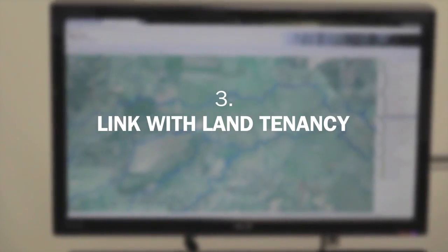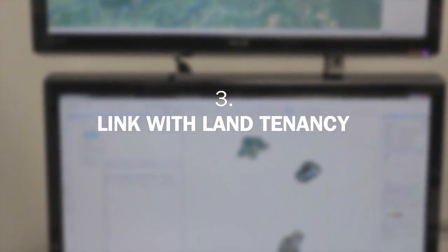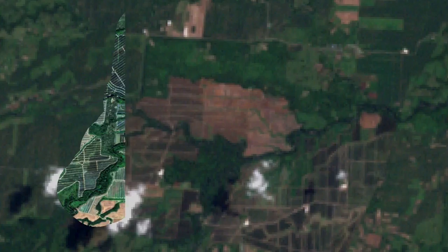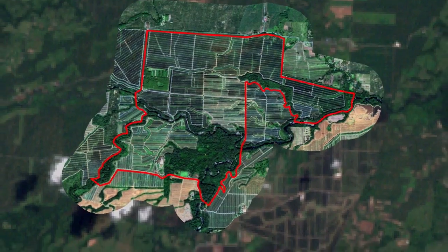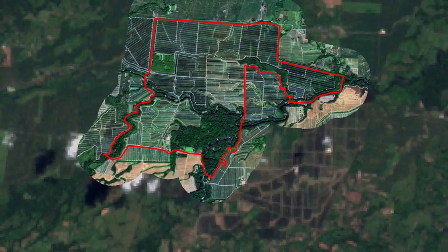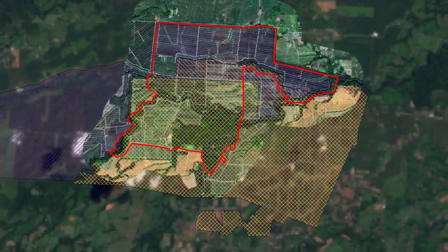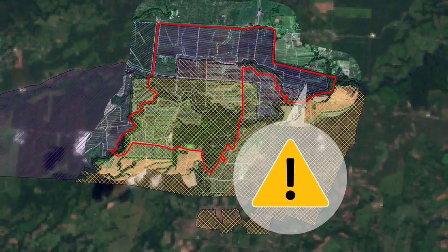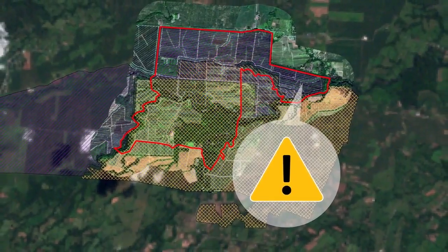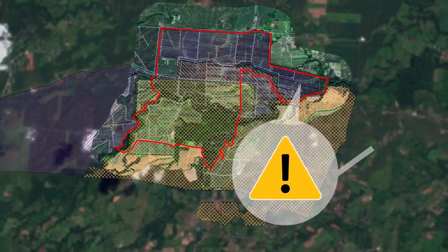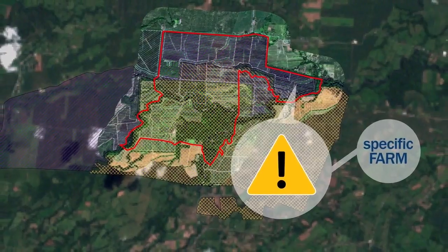The third principle is the link with land tenancy. The system only processes images of productive landscapes for which there is a layer of information recording land tenancy. This facilitates the establishment of payment for ecosystem services schemes within productive landscapes, by relating the layers of land use change with the layers of tenancy of specific farms.